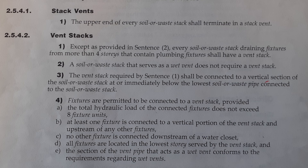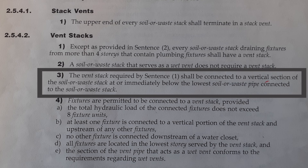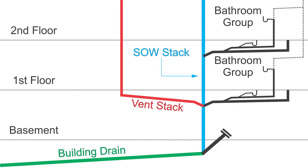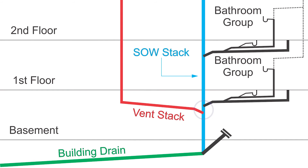Next, Clause 2542, part 3: the vent stack required by sentence 1 shall be connected to the vertical section of the soil away stack at or immediately below the lowest soil away pipe connected to the soil away stack. With this first example, we see the vent stack joining together with the lowest bathroom group connection — joined with a double Y connection at the lowest soil away pipe connection. In the next example, we have a vent stack joining into the soil away stack slightly below that lowest bathroom group connection, so they each have their own Y connection — we call that 'immediately below.'